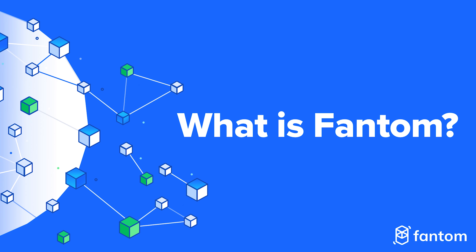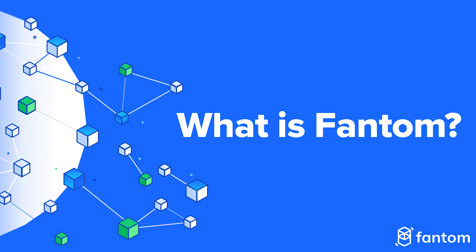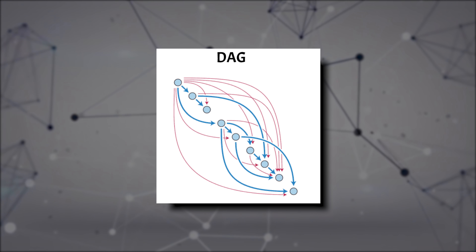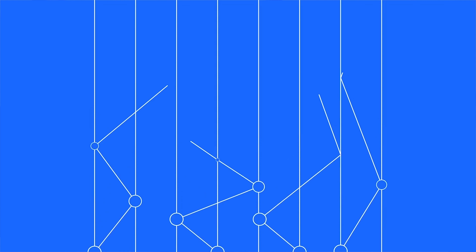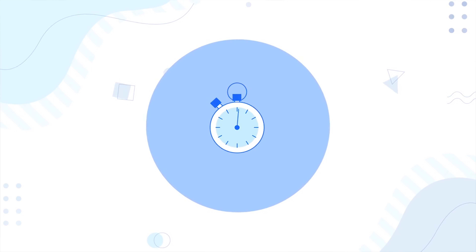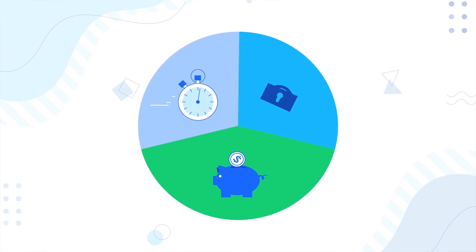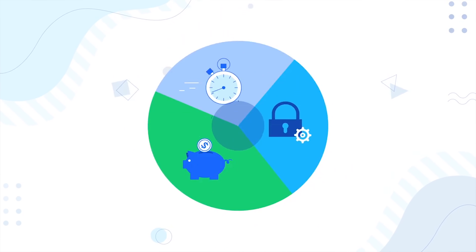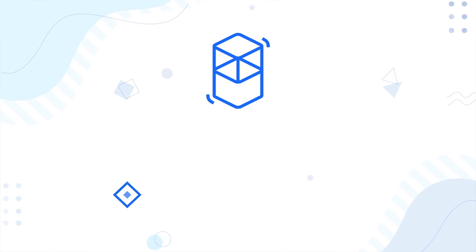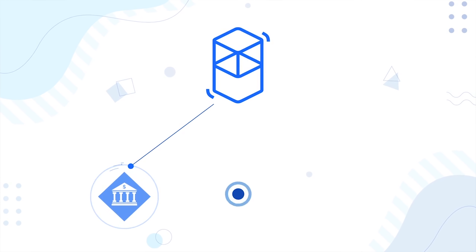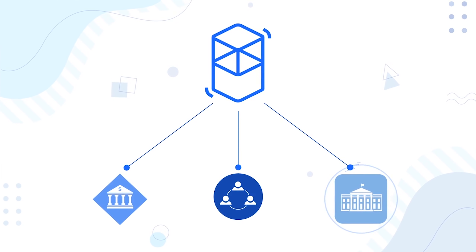So what is Fantom? Fantom is a directed acyclic graph, or DAG-based smart contract platform that uses a proprietary proof-of-stake mechanism called Lachesis to validate transactions. It's designed to be extremely fast with exceptionally low fees, highly secure and infinitely scalable — solving all three of crypto's elusive trilemma limitations. It does this through a type of proof-of-stake consensus algorithm.